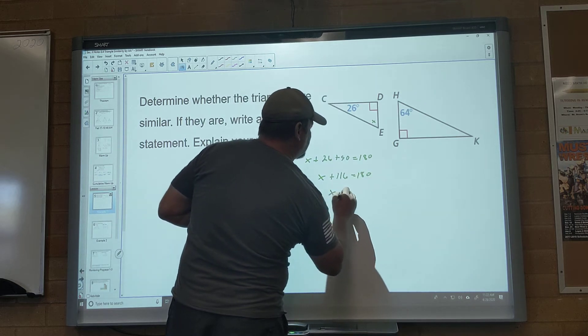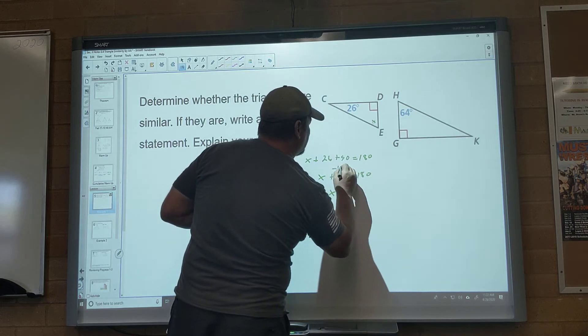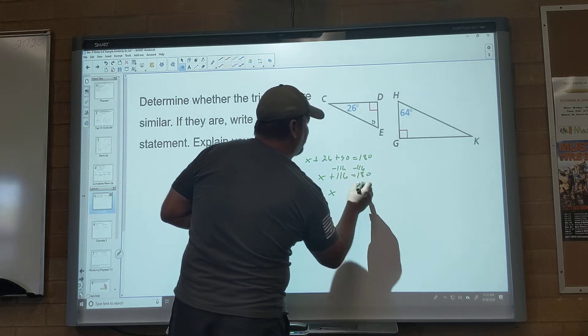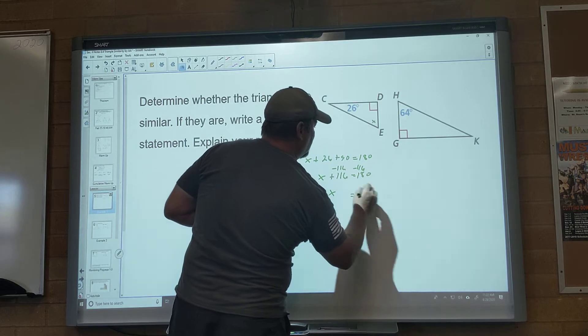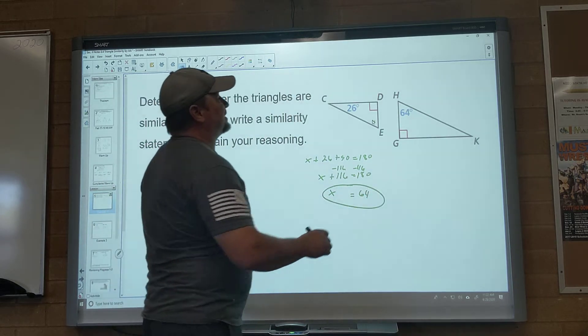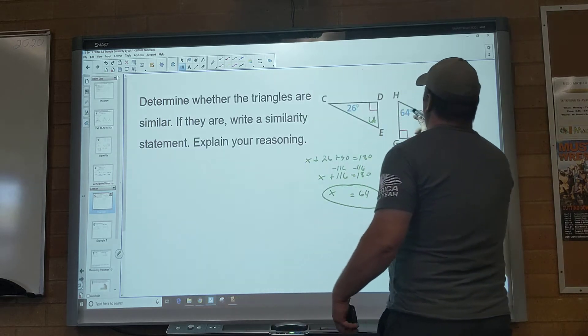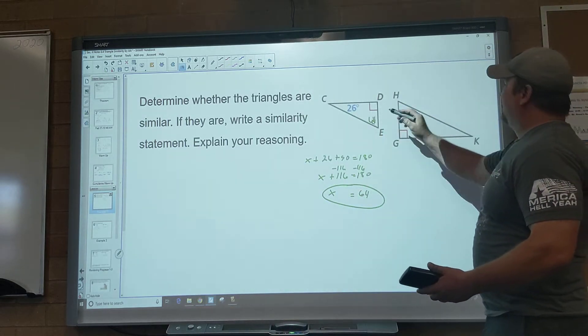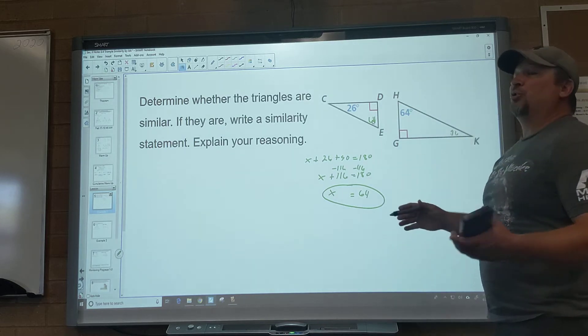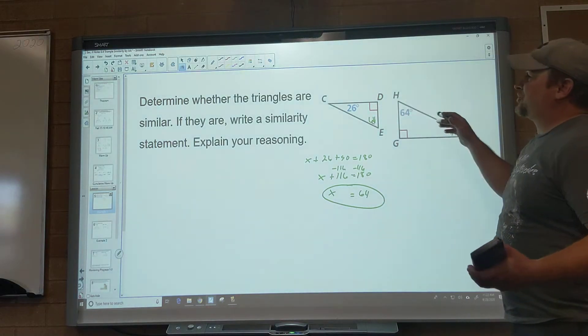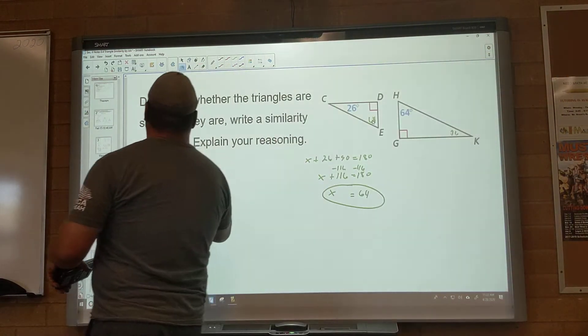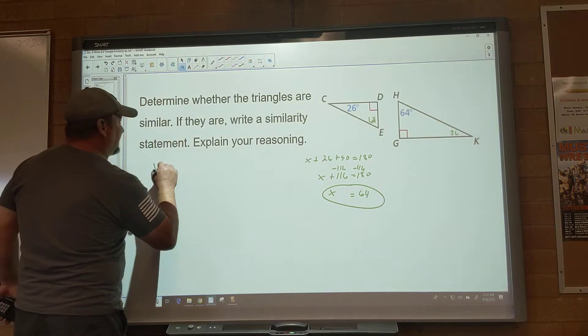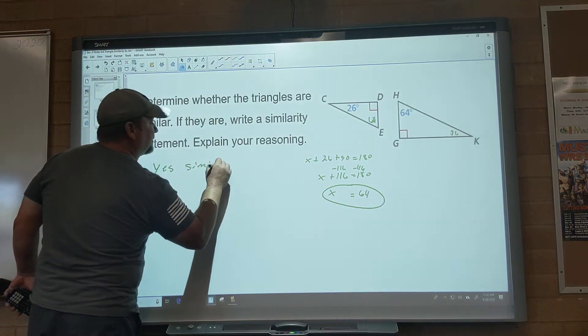180 and subtract it, so x equals minus the 116, and I get 64, I believe. So if this is 64, then wait a minute, if I already know that one's 64 and that's 90, then this has to be 26. So do I have two angles on each triangle that are congruent? I do. So they are now similar, so yes, similar.